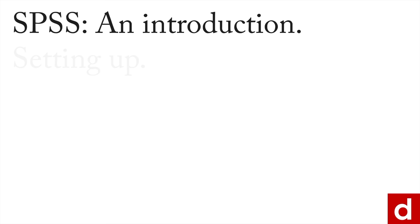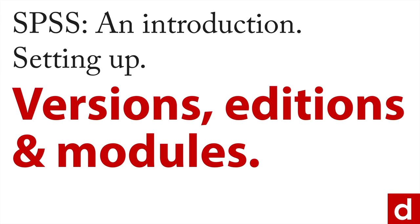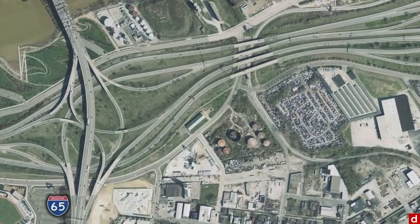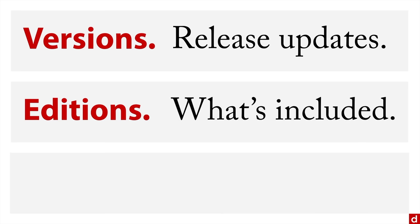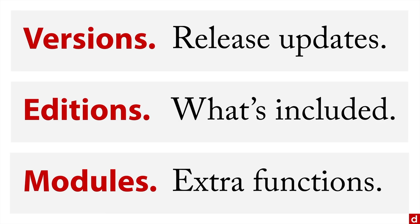The first thing we need to talk about in SPSS is setting up and getting ready to do the work. To do that, we need to take a minute and talk about versions, editions, and modules, which all refer to different kinds of things in SPSS. The choices can feel overwhelming, so let's break it down. Versions are the release updates — version one, version two, and so on. Editions vary according to what's included in a particular purchase. And modules are extra functions you can add on to the abilities of SPSS. We'll start by talking about versions.